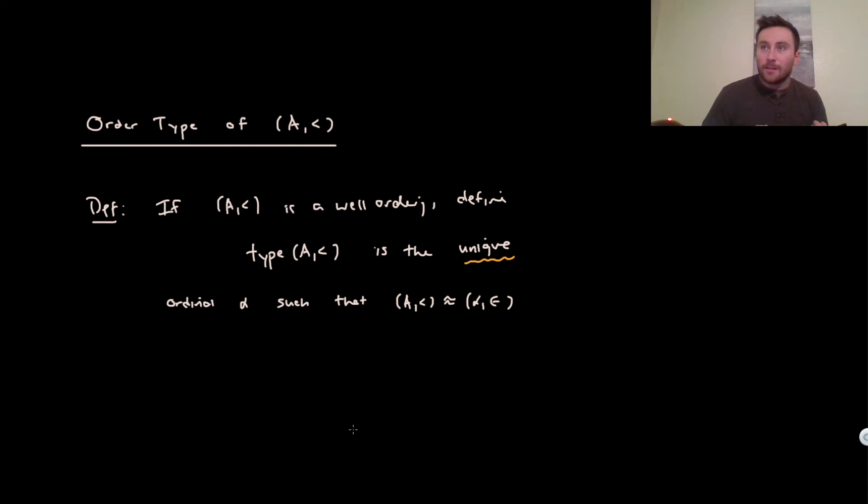But we actually showed from the previous video that all the well-orderings can be thought of, in terms of their order theoretic properties, as certain types of ordinals. So in other words, the ordinals are representations or representatives of the ways that we can well-order a particular set. They're the canonical way to represent the well-orderings of sets in the set theoretic universe.